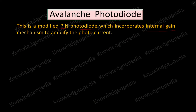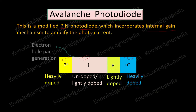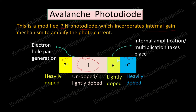The modification made in the PIN photodiode to obtain an avalanche photodiode is that in PIN photodiode there were three regions: p-plus, intrinsic, and n-plus. In the avalanche photodiode, there is one additional layer between the intrinsic region and the n-plus region, and this region is a lightly doped p-type. In this avalanche photodiode, the electron-hole pair generation takes place in the intrinsic region, and the internal amplification of carriers occurs in this p region introduced between the intrinsic and n-plus regions.